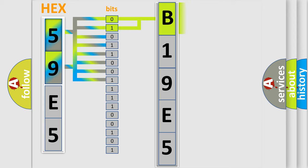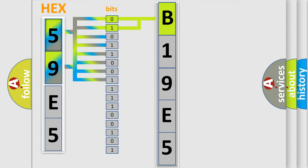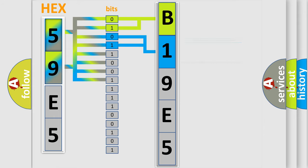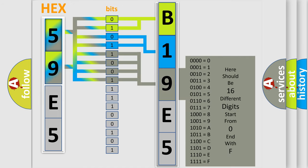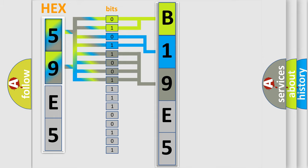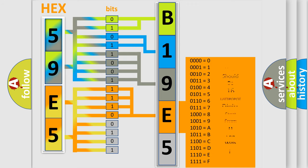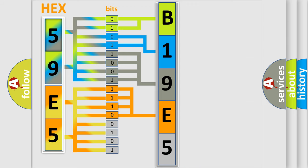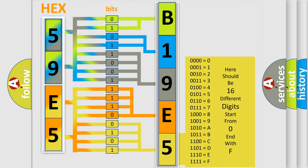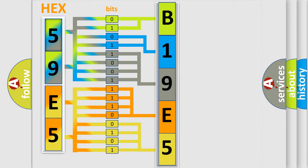By combining the first two bits, the basic character of the error code is expressed. The next two bits determine the second character. The last bits of the first byte define the third character of the code. The second byte is composed of a combination of eight bits — the first four bits determine the fourth character, and the last four bits define the fifth character. A single byte conceals 256 possible combinations.